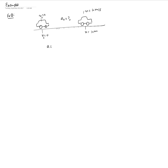Since acceleration is constant, we can use one of Galileo's equations. We need to relate position, velocity, and acceleration — with no time involved. The suitable equation is v² = v₀² + 2a₀(s − s₀), where s − s₀ is the distance traveled.